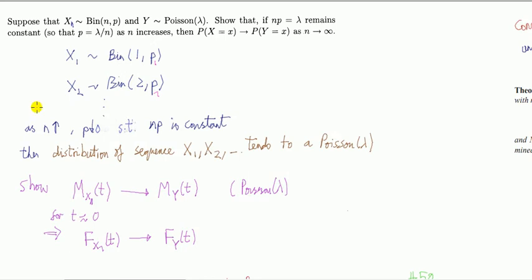So now let's actually state the result. Suppose we've got a sequence, X subscript n, sequence of random variables that are binomial. And let's say you've got Y which is Poisson. I want to show that this binomial, sequence of binomials, tends to a Poisson under a certain condition.